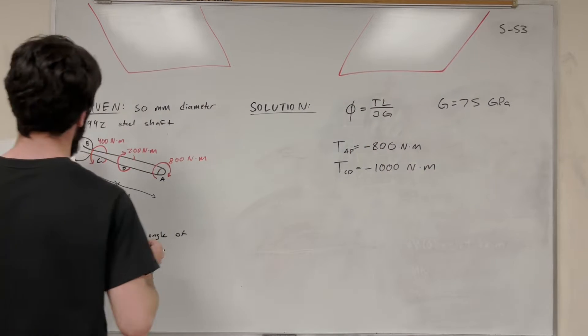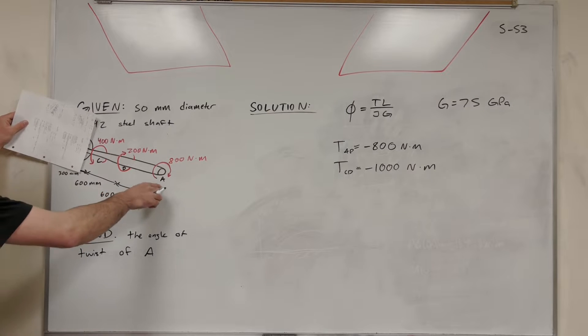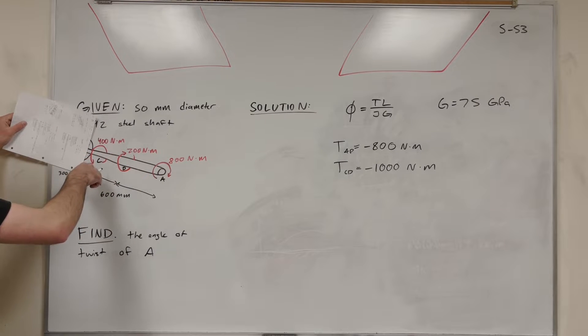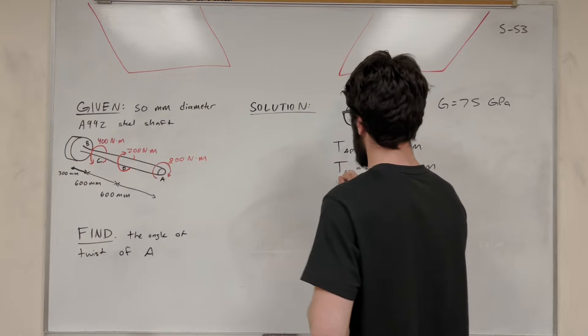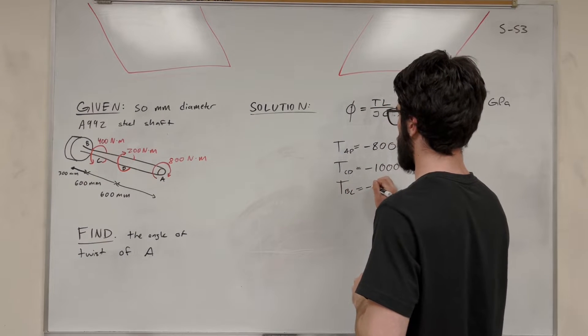So then finally we're at BC. So we're all the way at the end here. We have this negative 800 minus 200, so we're negative 1,000. But then this 400 is going in opposition. So we need to add 400 to that to get that tension. And BC is equal to negative 600.